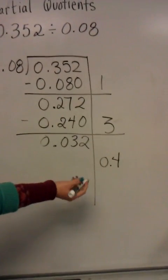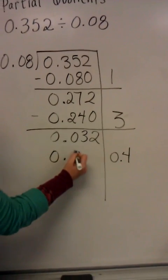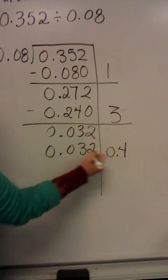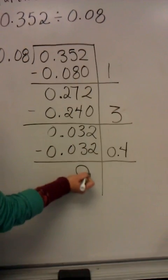4 tenths times 8 hundredths is 32 thousandths. And I end up with no remainder.